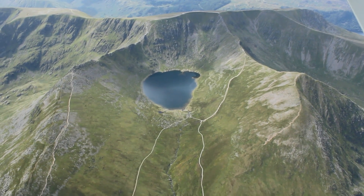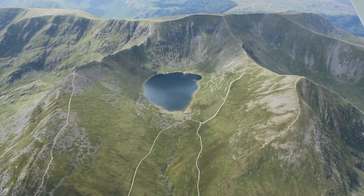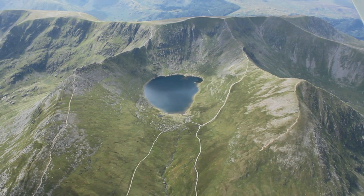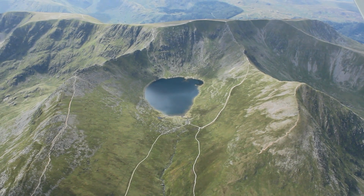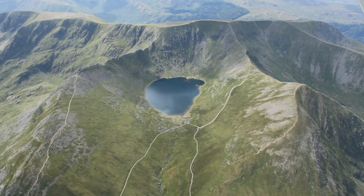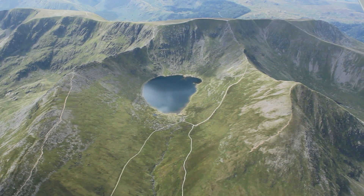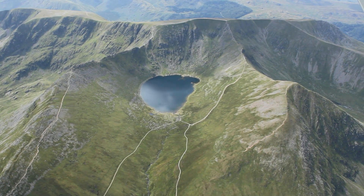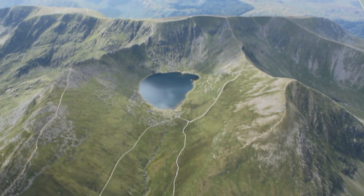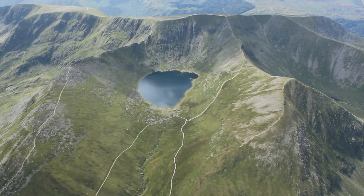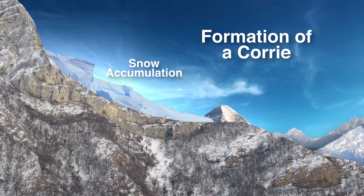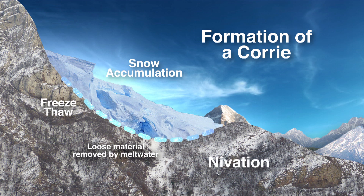Most of these depressions would have begun life as small hollows. They were often north-facing, which meant that any snow that collected in them was shaded from the sun. Underneath the snow, freeze-thaw action loosened material which was then removed by meltwater, a process called nivation.